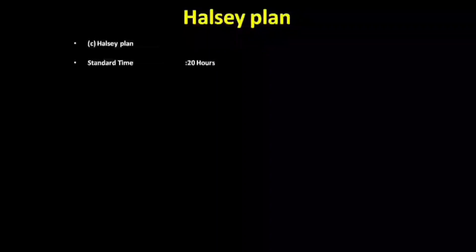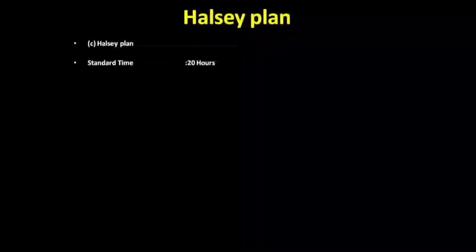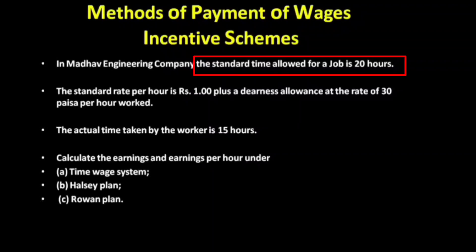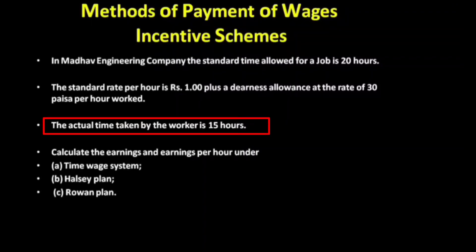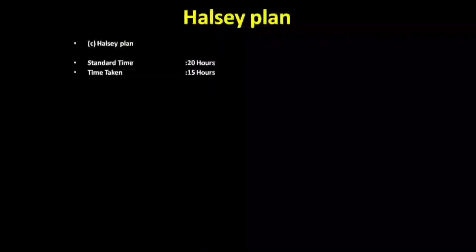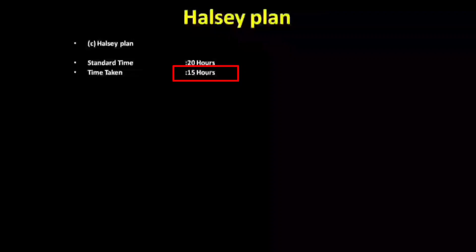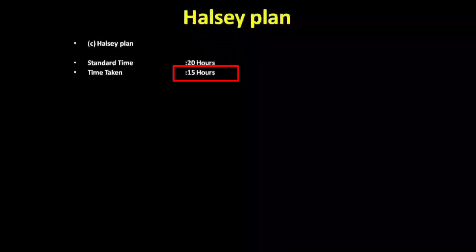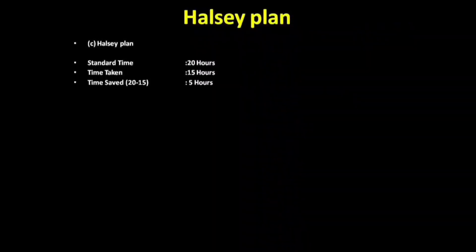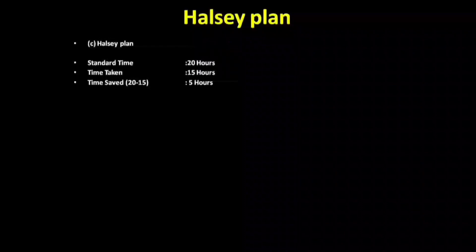We will find that the standard time is 20 hours, but the problem states time taken is 15 hours. Now we have to cover the Halsey plan — we will save time. The standard time is 20 hours, but the task is completed in 15 hours, so time saved equals standard time minus actual time: 20 minus 15 hours.